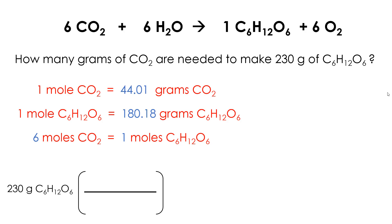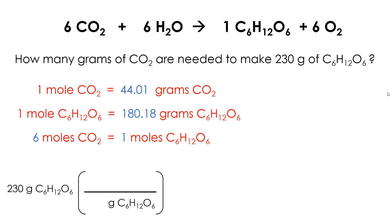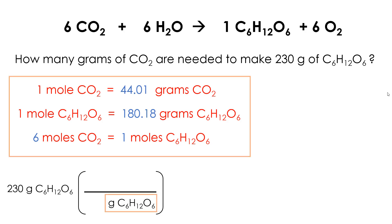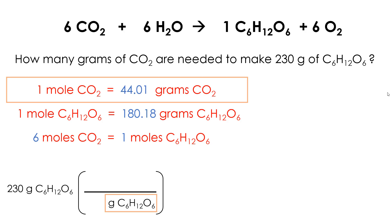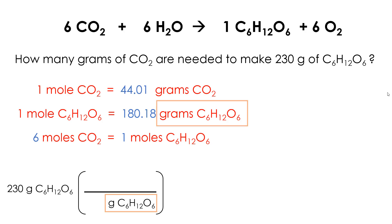Which one do I choose? I have three, and here's how you do it. You look for the unit on the bottom of the conversion fraction that matches the unit before it — they have to be exactly the same. That means the same unit, grams, and the same chemical, glucose in this case. Now that I know what goes on the bottom, I look for an equality relationship that has grams of glucose. The first one does not — it's about moles and grams of carbon dioxide. The second one does have grams of glucose, so that's what I'm going to use.